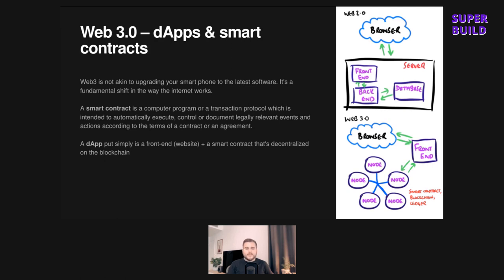Third, there's front-end code — typically written in a combination of JavaScript, HTML, and CSS — which defines what the site looks like and what happens when a user interacts with it. When you write a blog post on Medium, you interact with the front-end, which talks to the back-end, which talks to the database. All of this code is typically hosted on a centralized server like AWS or Google Cloud, and you as the user interact with it through a web browser like Chrome or Safari.